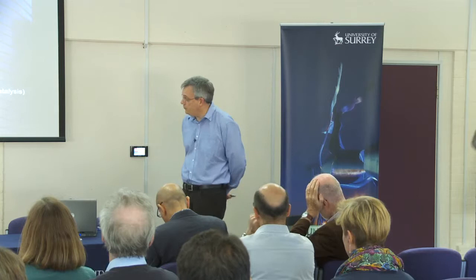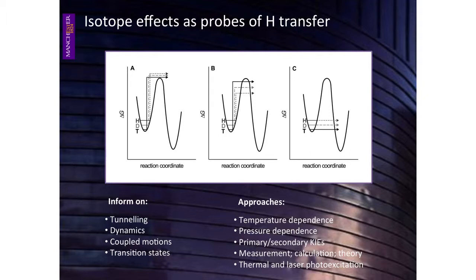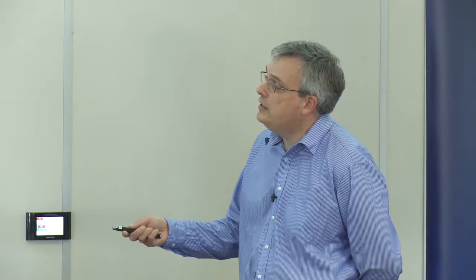Given that tunneling is now widely acknowledged in the field, the current controversies are more on how dynamics might assist in these particular reactions. I'm an enzymologist and we've been using isotope effects as probes of hydrogen transfer. Isotope effects can report on tunneling, and they can report indirectly on dynamics — that's where the real debate is at the moment. I want to give you some new data that I think is convincing that dynamics are involved in these particular reactions.